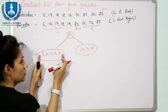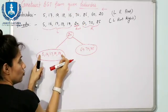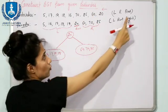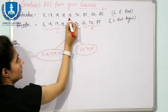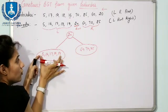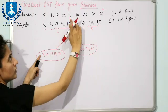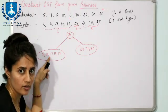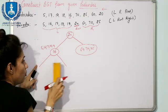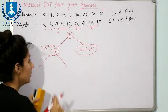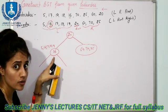Traversing post-order from right to left, out of elements {5, 16, 17, 18, 19}, we find 16 is the rightmost — so 16 is the root. Now locate 16 in the inorder traversal. To the left of 16 we have only 5, so 5 is in the left subtree. To the right of 16, out of these elements, we have 17, 18, and 19.